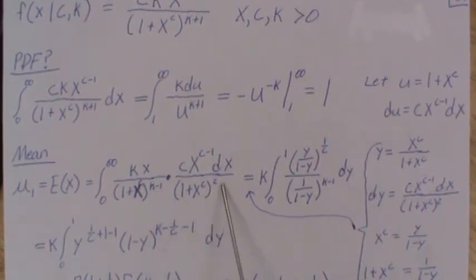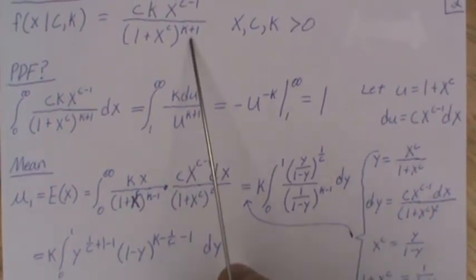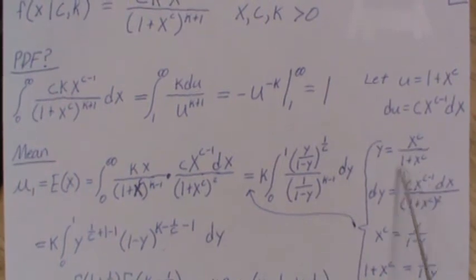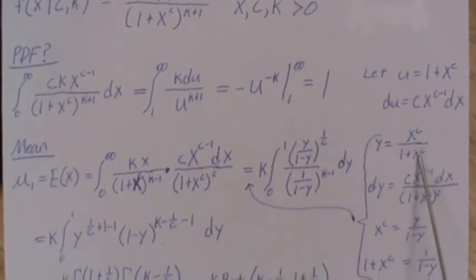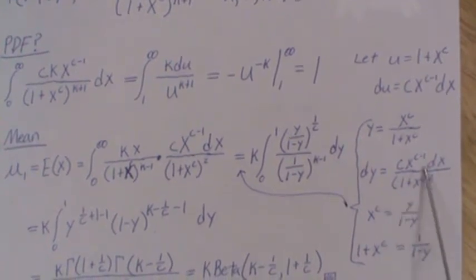But this is the, we're going to let Y equal X to the C over 1 plus X to the C. So DY is equal to this, which is what this piece is here.